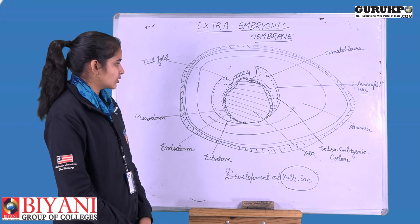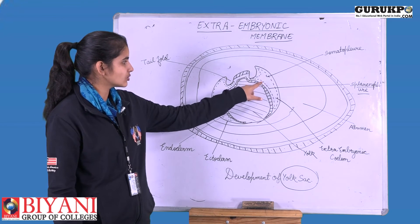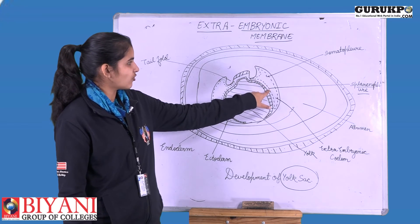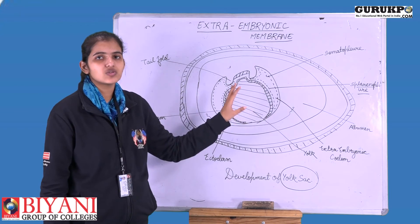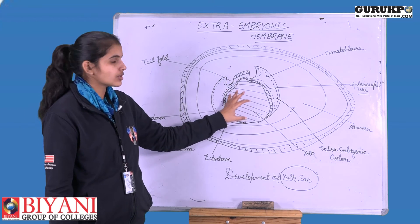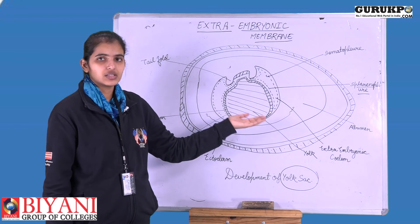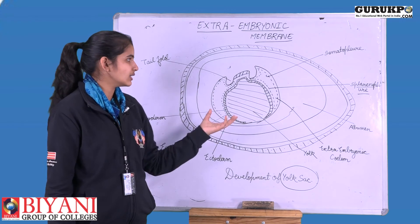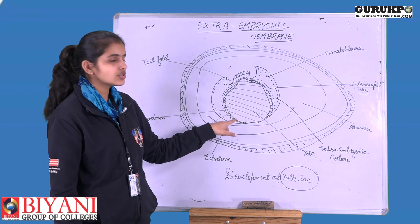Splanchnoplure is basically the combination of endoderm and mesoderm of the area opaca. The layer represented with the dotted line is the mesoderm, and the lower layer is the endoderm of the embryo. These two together form the splanchnoplure, which gives rise to the yolk sac. The yolk sac has the primary function of providing the embryo with nutrition and has the function to reabsorb the yolk content.